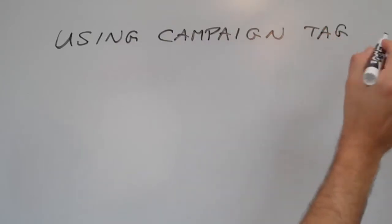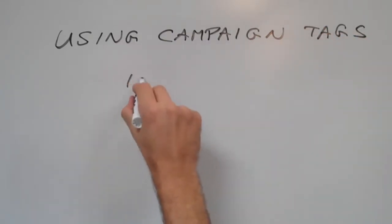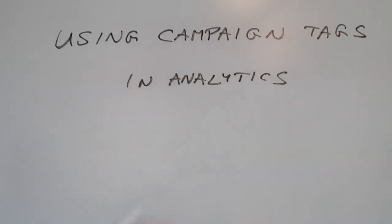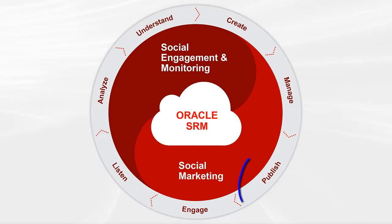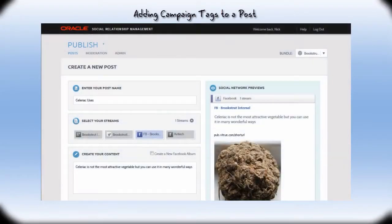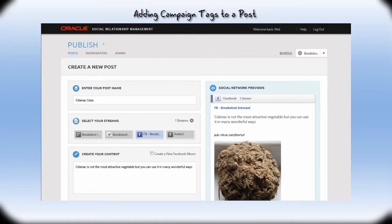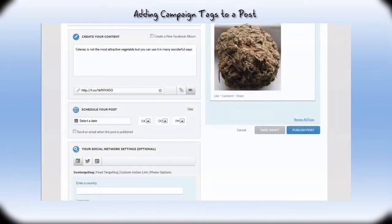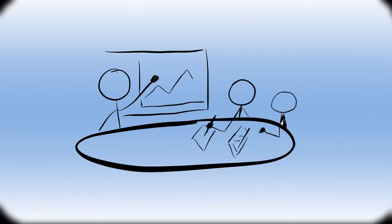Oracle Social Marketing welcomes you to using campaign tags in analytics. This is Cindy, and in this demo I will show you how to assess the effectiveness of your social campaigns by using Listen and Analyze. We showed you in another demo how to use the Publish tool to create tags in your social properties. This demo shows you how to analyze the results of using those tags.